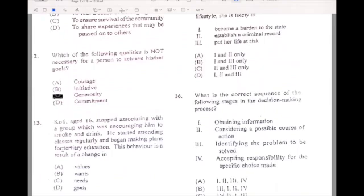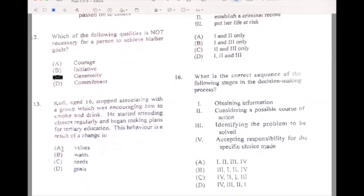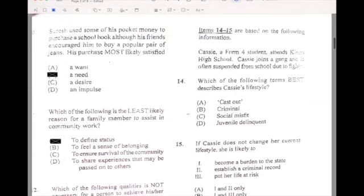Number thirteen, age sixteen, stopped associating with a group which was encouraging him to smoke and drink. He started attending classes regularly and begun making plans for tertiary education. This behavior is a result of his values. Number fourteen and fifteen refer to the following information. Cassie, a form four student, attends King's High School. Cassie joined a gang and is often suspended from school due to fights. Which of the following terms best describes Cassie's lifestyle? If your answer is D, then you're correct.